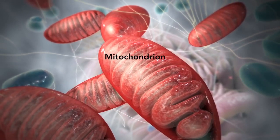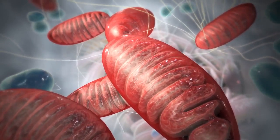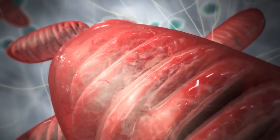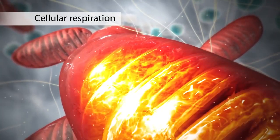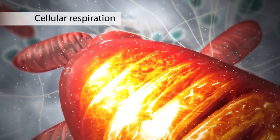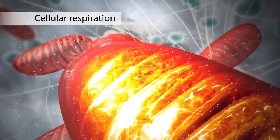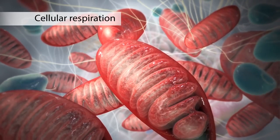The mitochondrion is an organelle that is the powerhouse for both animal and plant cells. During a process called cellular respiration, the mitochondria make ATP molecules that provide the energy for all of the cell's activities. Cells that need more energy have more mitochondria.